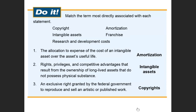Let's go through the review slides. The allocation to expense of the cost of an intangible asset over its useful life is called amortization. Rights, privileges, and competitive advantages that result from the ownership of long-lived assets that do not possess physical substance are called intangible assets. An exclusive right granted by the federal government to reproduce and sell an artistic or published work is called a copyright.